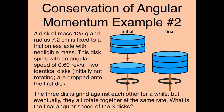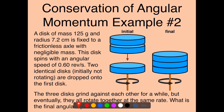Then we have two identical discs, which are initially not rotating, dropped onto the first disc. These two discs are the same size and the same mass as the first disc — they're not rotating initially, and they're dropped onto the first disc.